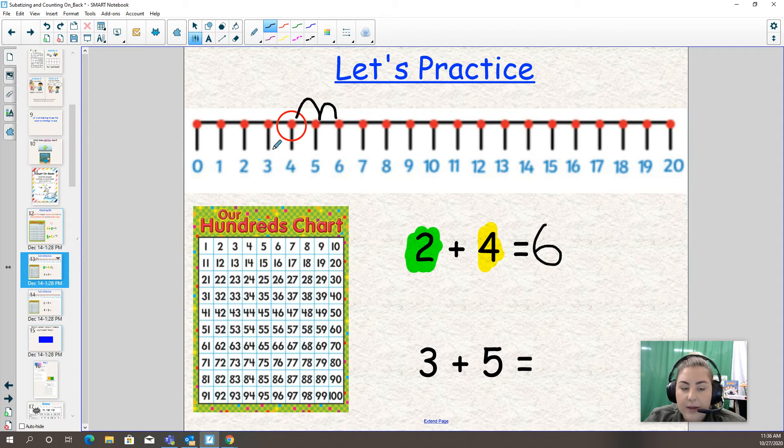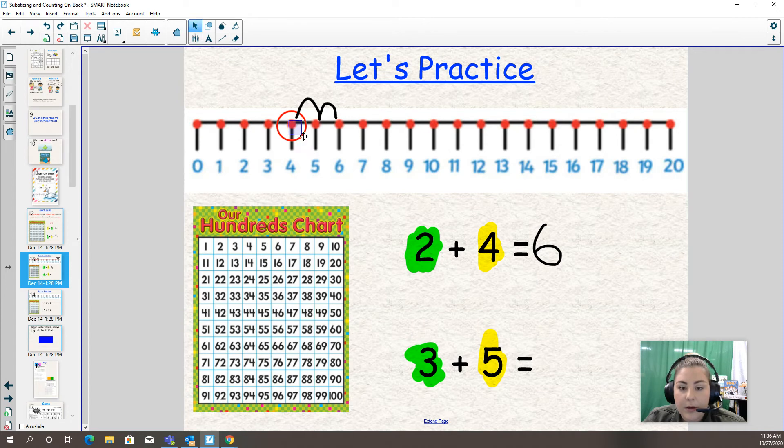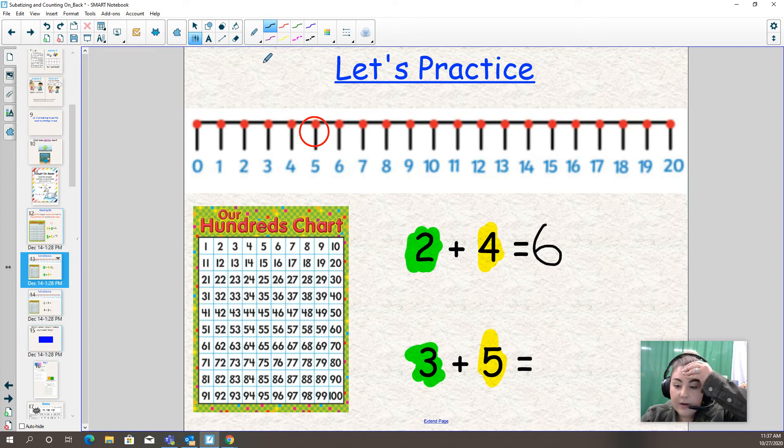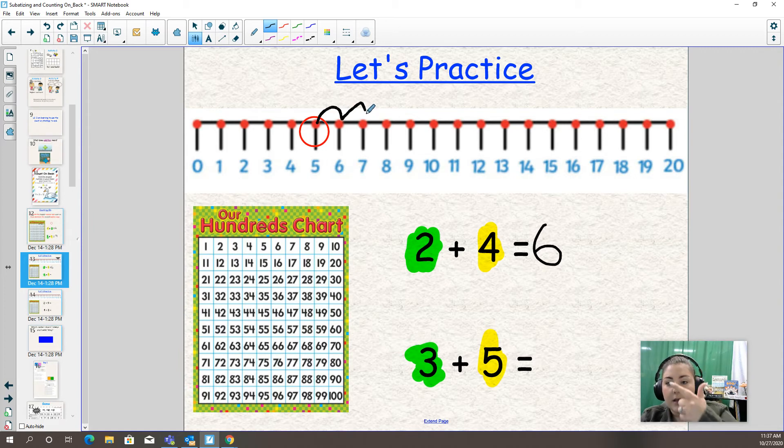Now three plus five. First of all, which one's the bigger number? Five. You got it. And then the smaller number is three, so that's what we're counting on by. We're going to put our dot on five and count on. Let's count on three times. We put five in our heads, or five on the number line. Five, six, seven, eight. So three plus five is eight.